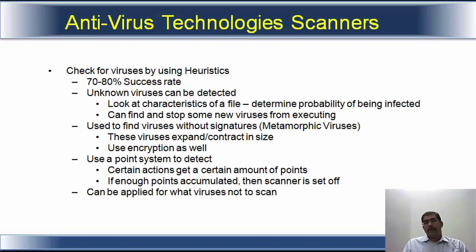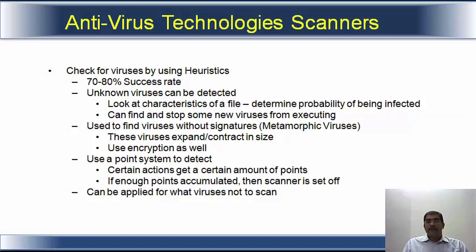The scanner checks for viruses by using heuristics — there is a 70 to 80 percent success rate. Unknown viruses can also be detected, meaning it looks for the characteristics of a file and determines the probability of it being infected. It can find and stop some new viruses from executing. Heuristic scanners are also used to find viruses without signatures — metamorphic viruses. These viruses expand and contract inside, so it is difficult to actually find out whether it is a virus or not. They may also use encryption, which again lowers the rate of detection.